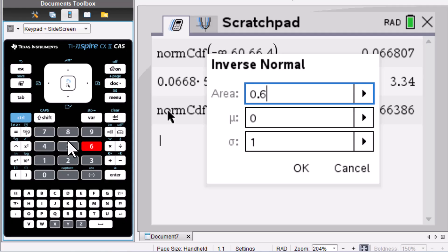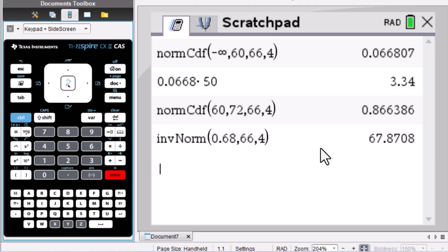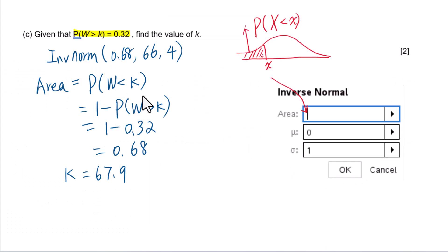0.68, mu is 66, standard deviation is 4, enter, enter. Answer is 67.9. We used this inverse normal in calculator. We got k equals 67.9.